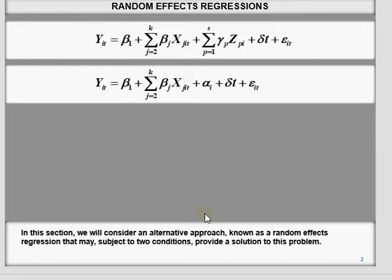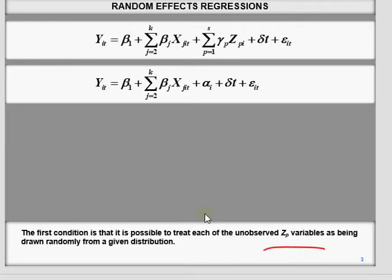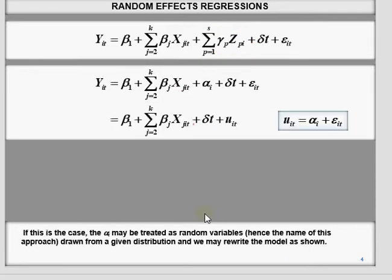In such cases and with some other conditions, we should consider the random effect model. The random effect model is a very effective tool, provided two conditions are satisfied in panel data. The first condition is that we should have Z_P as a random draw. The second condition is that this random draw, summarized as alpha_i, should be independent of x_it.